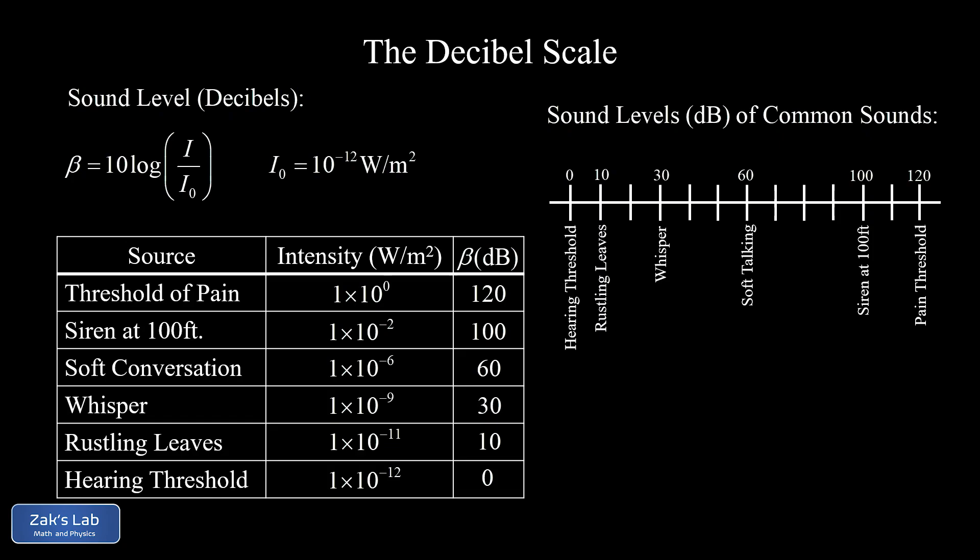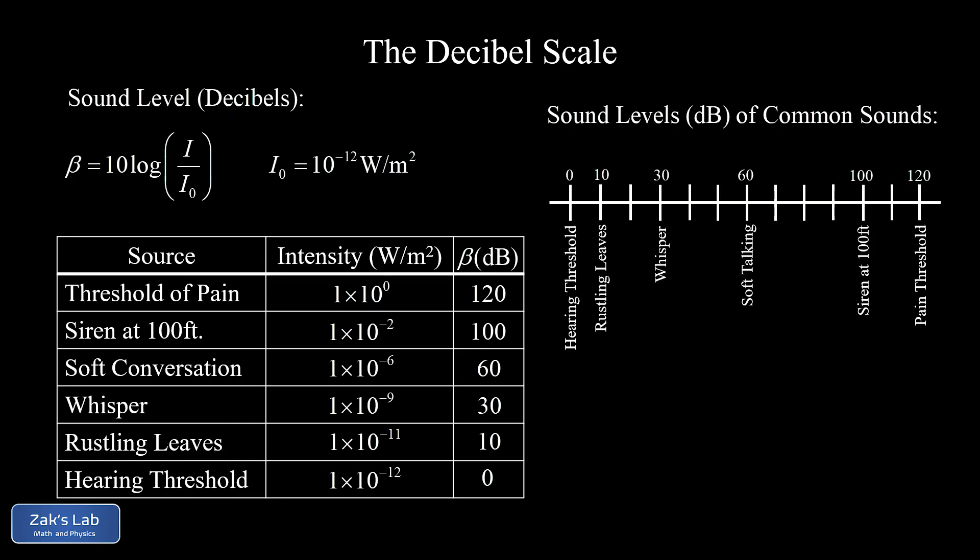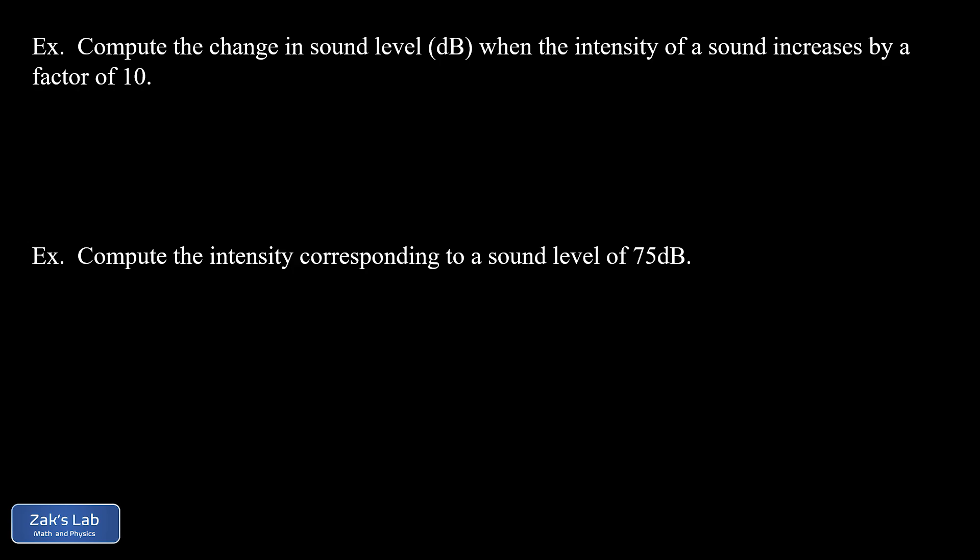We've decided to logify our loudness scale because it ranges over a huge number of orders of magnitude, but now we have to pay the price: we have to cope with the weirdness of logarithms when doing sound level calculations. Let's get into the typical calculations we might have to do. The first example asks us to compute the change in sound level in decibels when the intensity of a sound increases by a factor of 10.